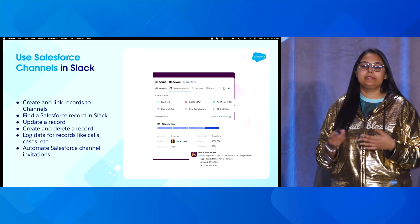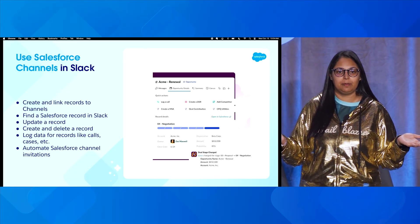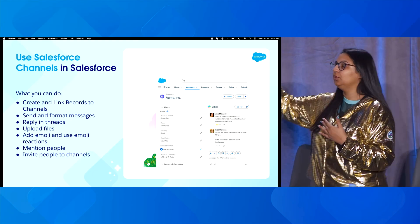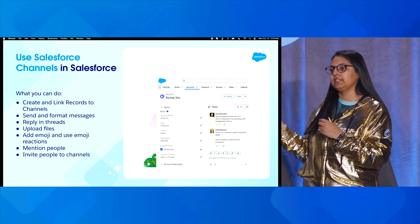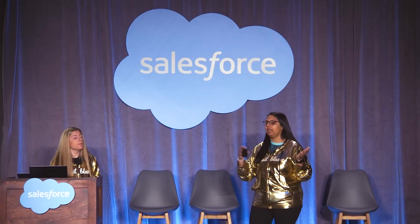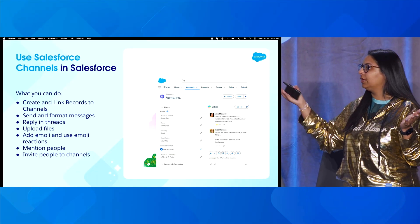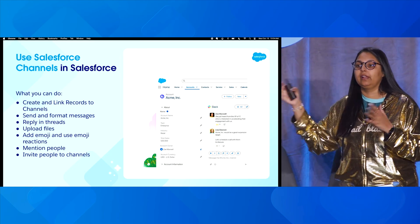Some of your salespeople may only want to use Salesforce, not Slack. On the Salesforce side, you will see the entire Slack widget with every record it is associated to. For example, if you've enabled Salesforce channels for opportunities or any other custom object, you can add this widget on your Lightning page and use Slack from there. You can share files, react with emojis, collaborate with team members, and add team members to the channel from Salesforce as well.